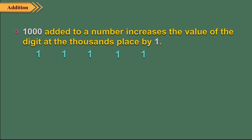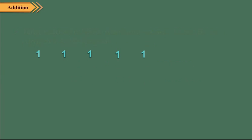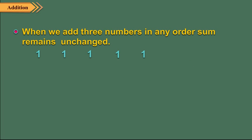When 1,000 is added to a number, it increases the value of the digit at the thousands place by 1. Let us see some examples. When we add three numbers in any order, the sum remains unchanged. Let us see some examples of this.